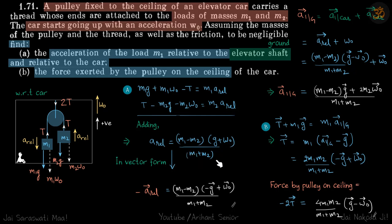But in the book the answer is given in vector form, so let's write that in vector form. We'll write each of these terms—A relative, G, and W naught—in terms of vectors. For that we need to assume a direction. Let's assume upwards to be positive, because he has given W naught upwards as positive. So now A relative: in our assumption we have taken A relative as downwards.